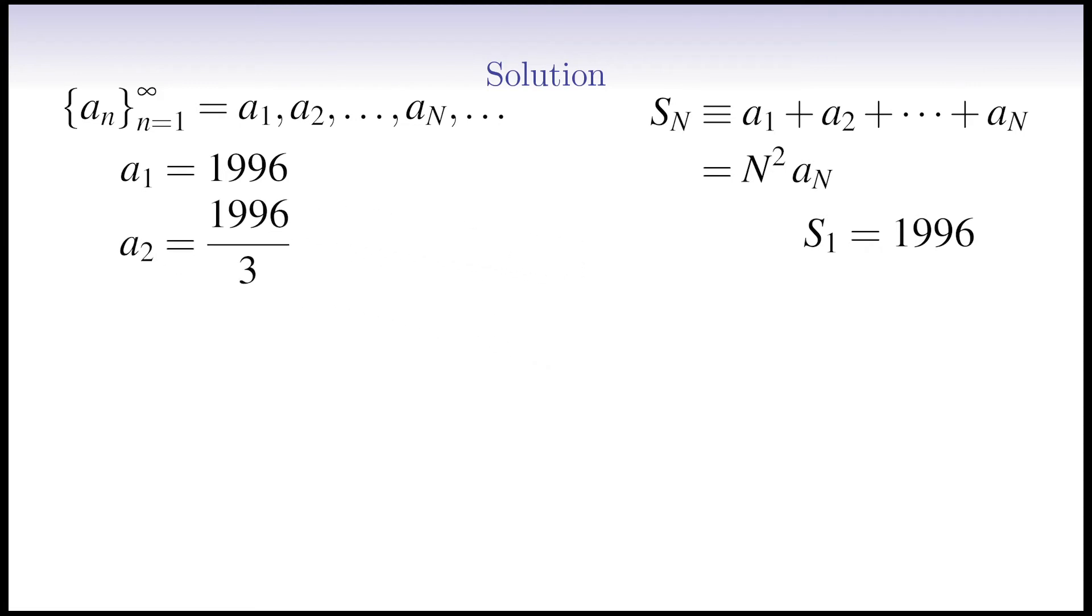Very good. Let's do the same and calculate the third term. S3 is A1 plus A2 plus A3. Replacing A1 and A2 by their values, and S3 by 3 squared multiplied by A3, we get 9A3 equal to 1996 plus 1996 divided by 3, plus A3. The sum of these two terms by taking the common denominator of 3 would be 4 multiplied by 1996 divided by 3. We now subtract A3 from both sides to get 8A3 is equal to 4 thirds of 1996. Then, we divide both sides by 8, and we obtain A3 which is equal to 1 sixth of 1996.